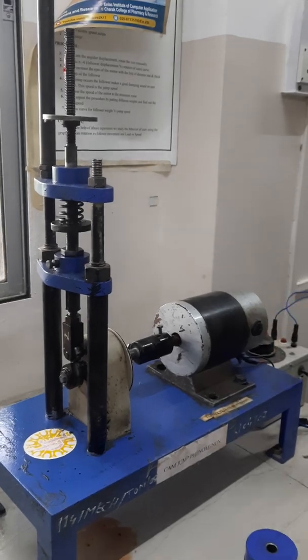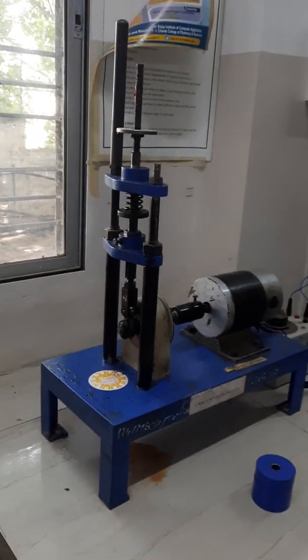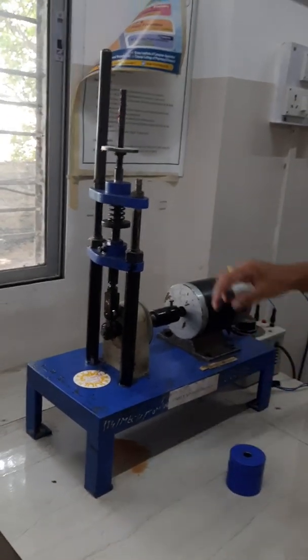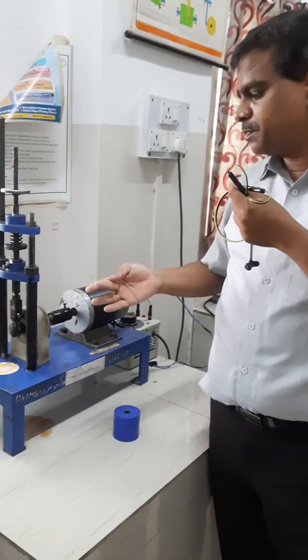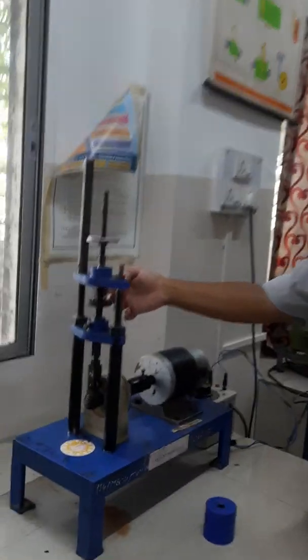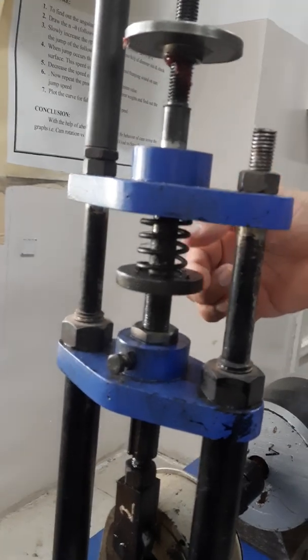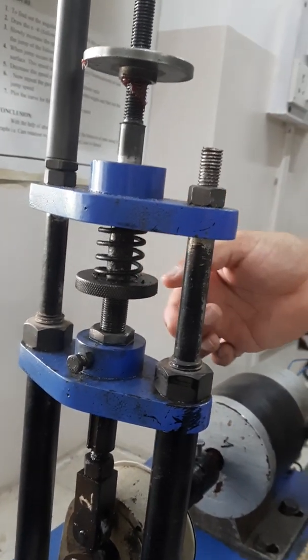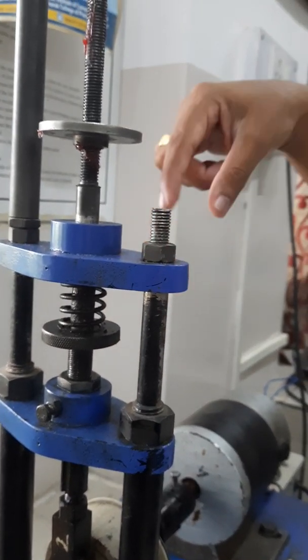The cam is losing the contact between its follower, so this phenomenon is called as the cam jump. So there are basically certain things which are responsible for the cam. Now here you can see one spring. It is having certain stiffness. If the stiffness of this is more, then what will happen, it will be constantly pressing towards the downside so that the contact will be maintained.